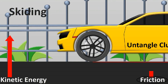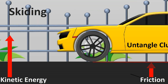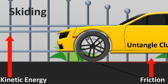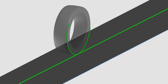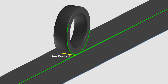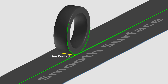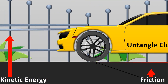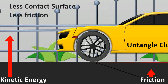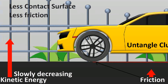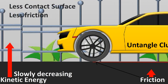Now the only friction available to stop your vehicle is the friction between the wheel and road caused by skidding. Roads are flat and tires are curved, so there is very little surface contact between both of them — called line contact. The roads are also smooth surfaces, decreasing the friction even more. Less contact surface with less friction cannot use up the kinetic energy of your vehicle as quickly as required.